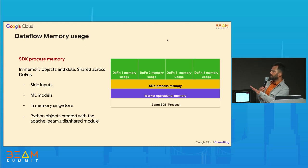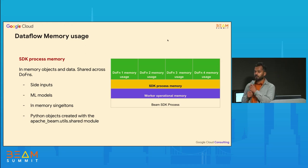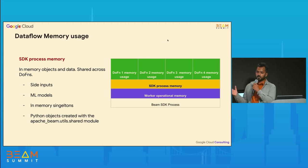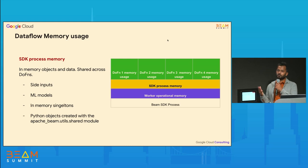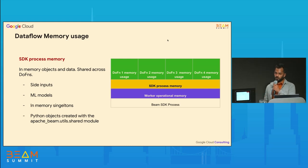Everything shown here is for one SDK process. It's easier to translate for Java pipelines, because there is one SDK process in Java. For Python, there is one SDK process per vCPU.